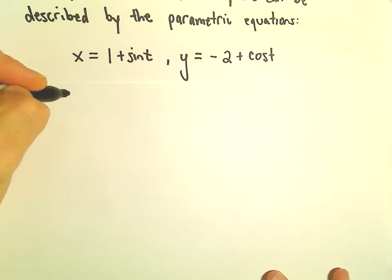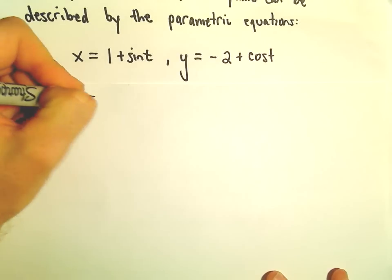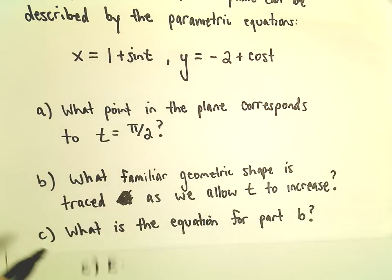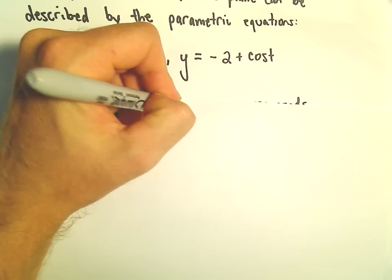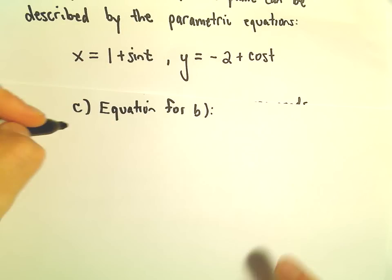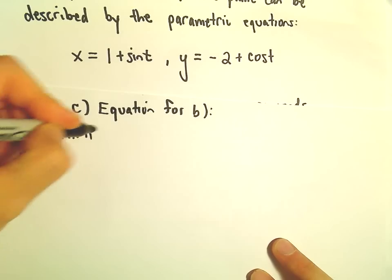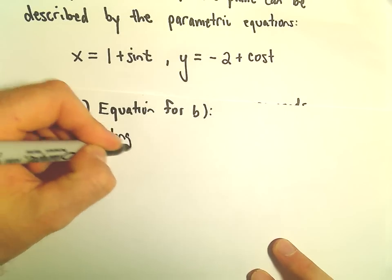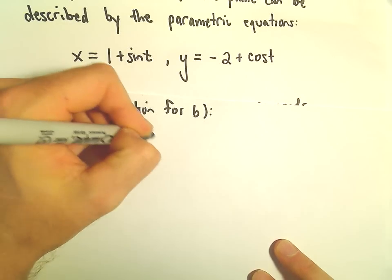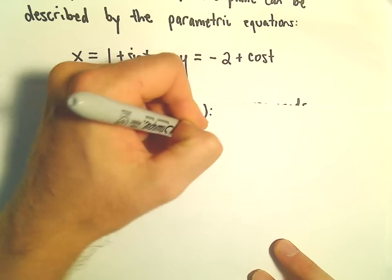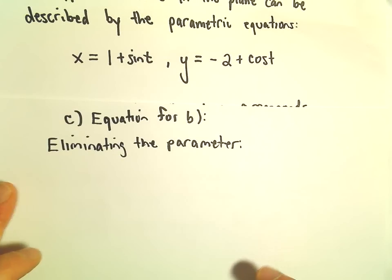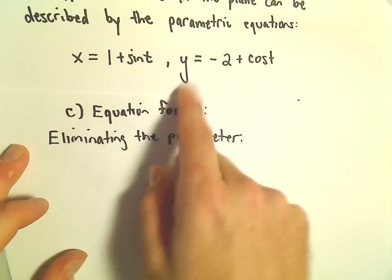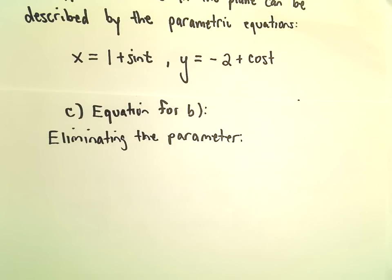The way we're going to find the equation for part B is by eliminating the parameter. What I'm going to try to do is simply produce an equation that relates x and y together. And then, hopefully, that'll be a formula that I'll recognize.